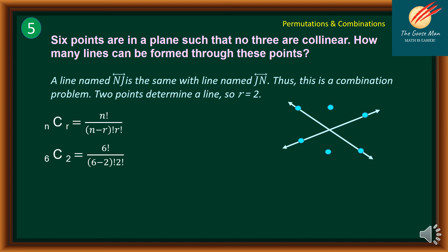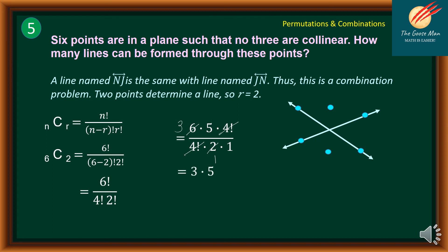Substituting: 6C2 equals 6 factorial all over 6 minus 2 factorial times 2 factorial, which gives 6 factorial over 4 factorial times 2 factorial. Expanding: 6 times 5 times 4 factorial, all over 4 factorial times 2 times 1. Factoring out 4 factorial and dividing 6 by 2 gives 3, so we have 3 times 5, which equals 15. Therefore, 15 lines can be formed.